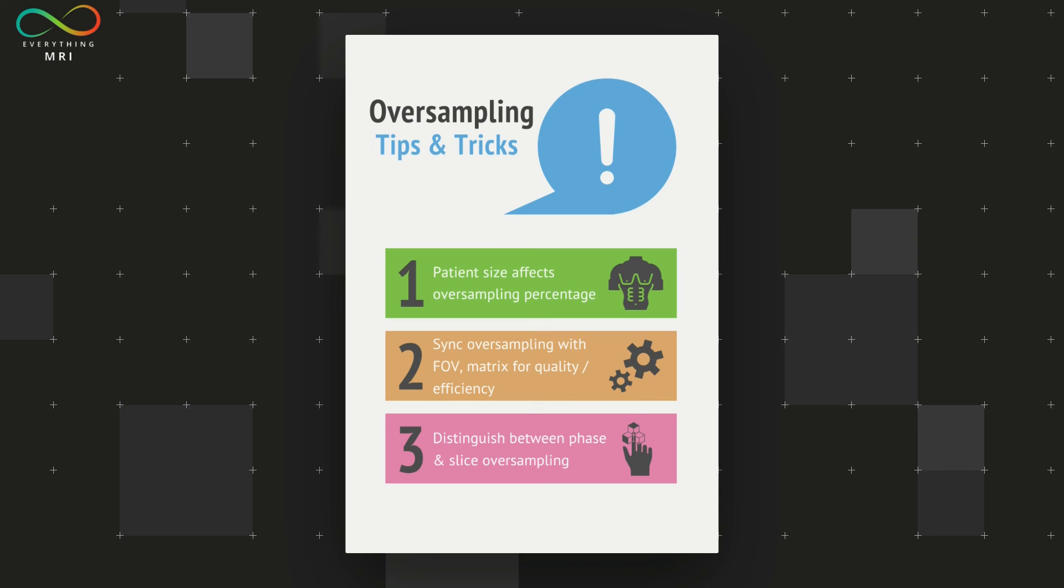Finally, as we mentioned at the beginning, aliasing mainly occurs on the phase encoding. But hear me out, there might also be situations where it can occur between end slices. And this predominantly happens when we acquire 3D sequences. In volumetric imaging, in fact, if the image volume extends beyond the field of view in the slab select direction, the phase wraparound artifact might occur between slices at the ends of the 3D partition.